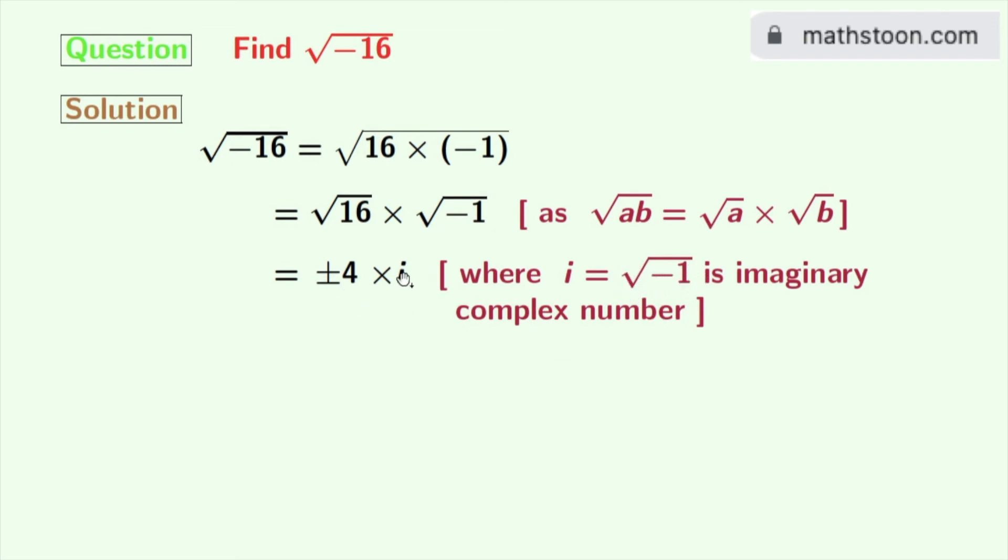After multiplying this we get plus minus 4i. So finally we get square root of minus 16 is equal to 4i or minus 4i.